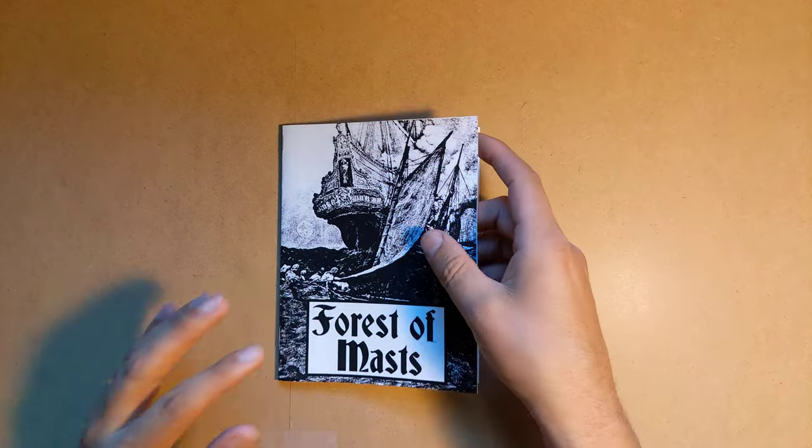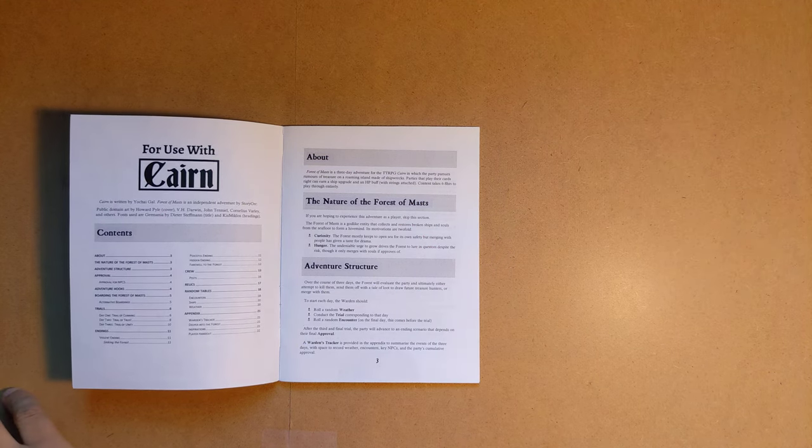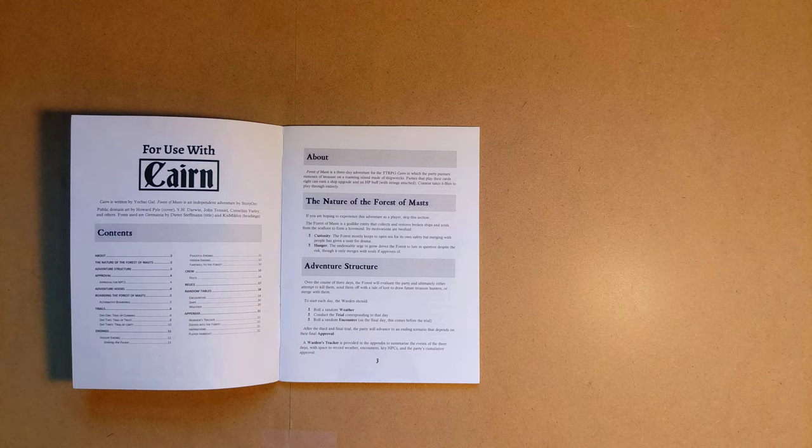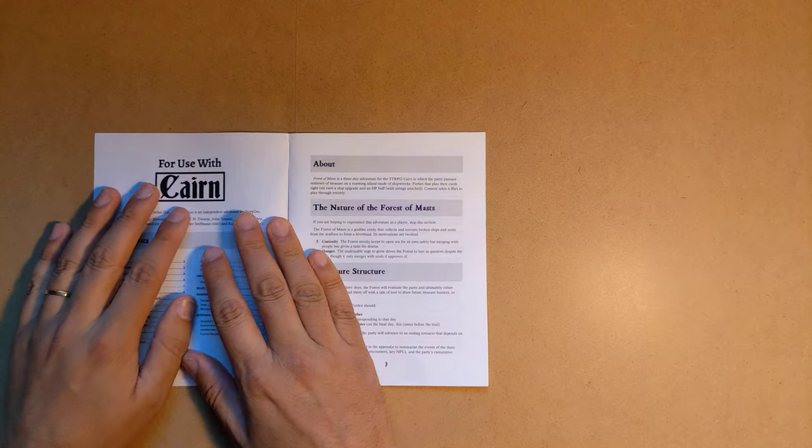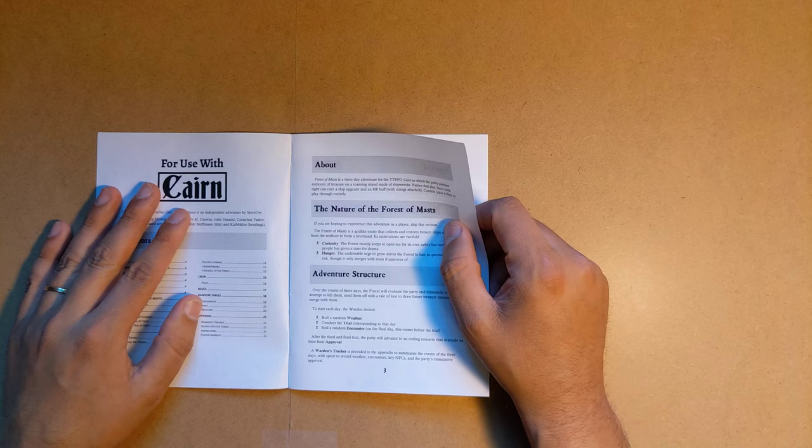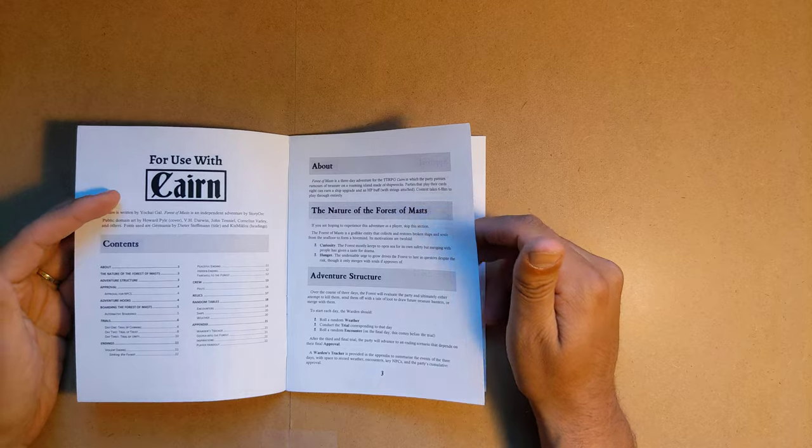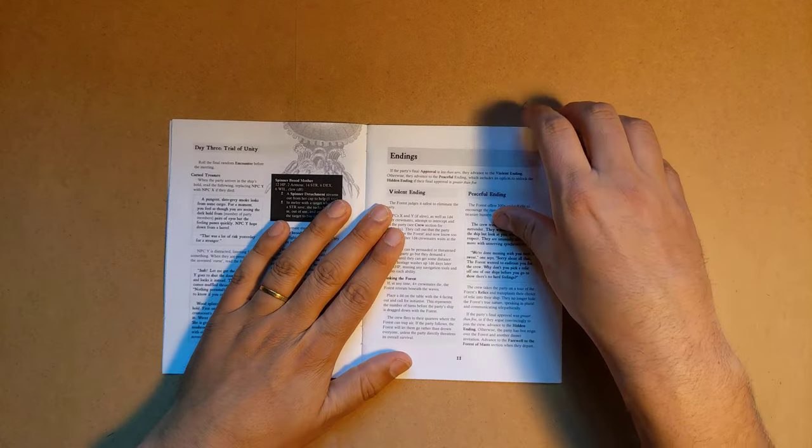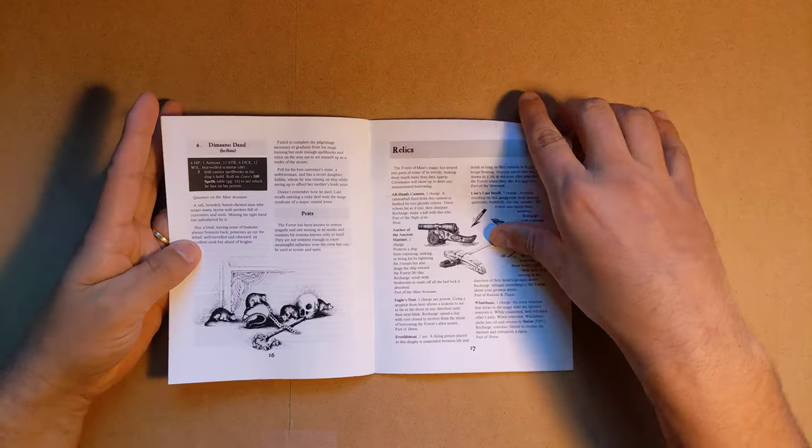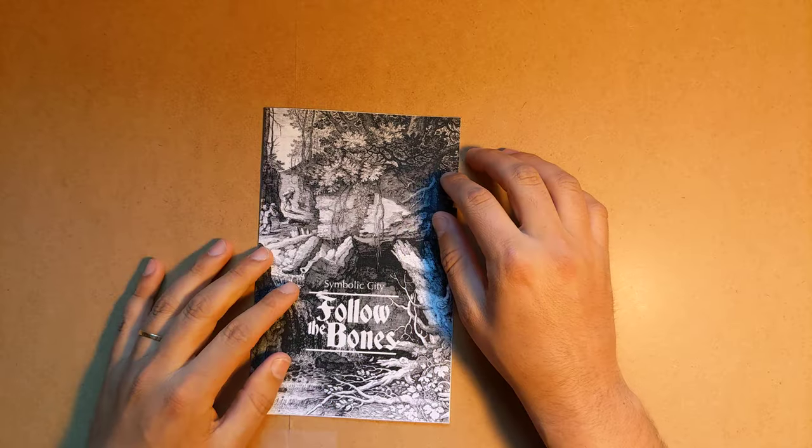Following that is Forest of Masts. So this one I really like because it actually is like a forest of a different name, where the forest is made out of shipwrecks, which is kind of an awesome idea. It is by StoryOrc, also known as Tweederm on the NSR Discord. It takes place over three days, the party pursues rumors of a treasure on a roaming island made of shipwrecks. It has different endings, NPCs, a page on relics, and just yet another excellent addition to the quite popular naval cairn universe, the expanded universe.